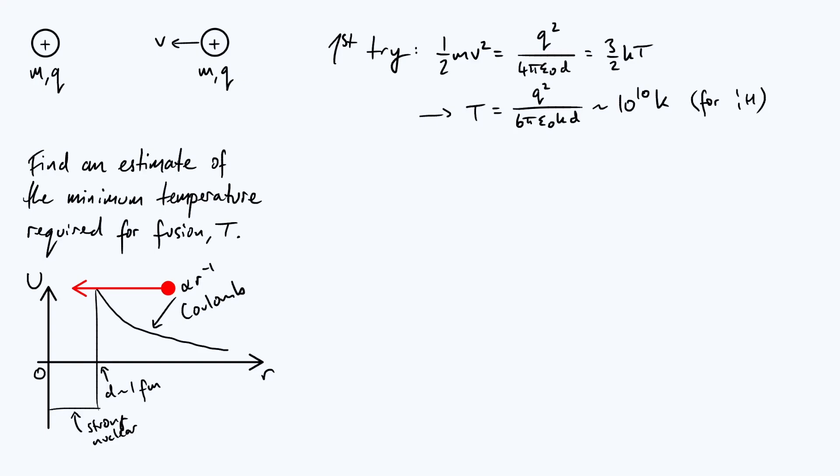Now is that actually a reasonable value? Well it turns out that the core temperature in the sun is about a thousand times smaller. So the absolute hottest temperature in the sun is about a thousand times smaller. What that means is that our first model was not that great, and there's probably some important piece of physics missing, because we know that fusion does of course happen in the sun, and you don't need a star that's a thousand times hotter to get hydrogen to fuse.